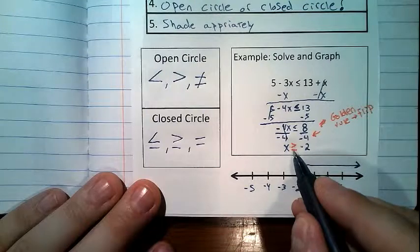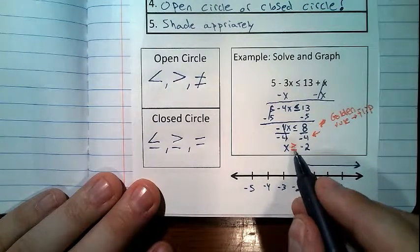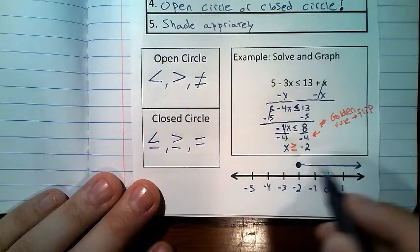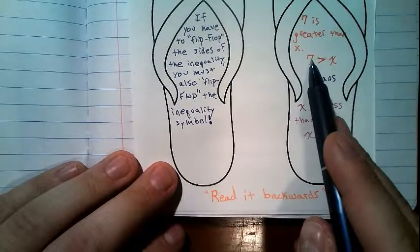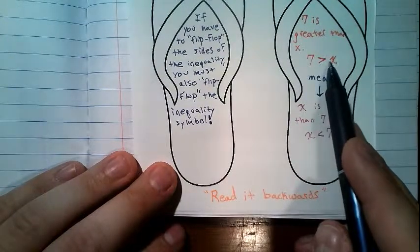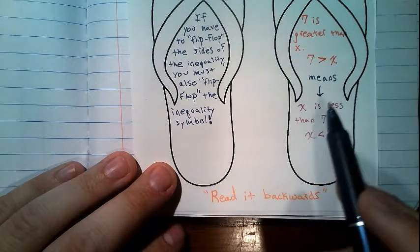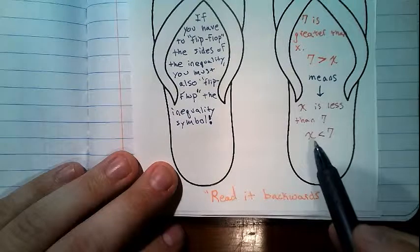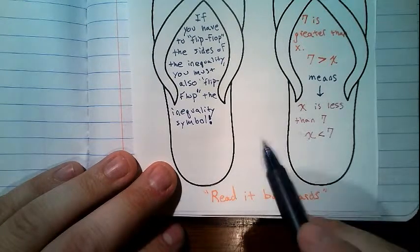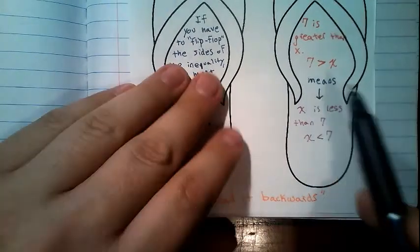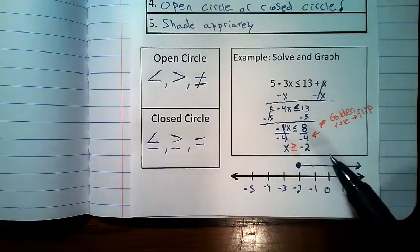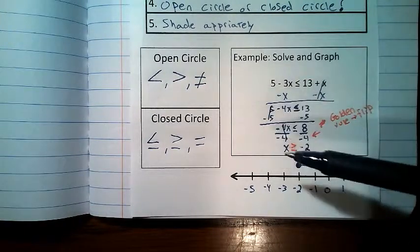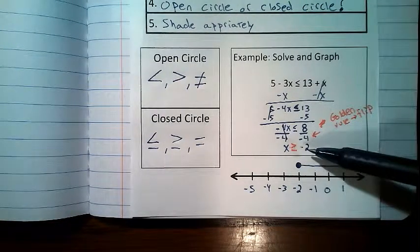That arrow shortcut doesn't work if it's not written correctly. For example, if 7 is greater than x and you shade right based on the arrow, that's wrong — x is actually less than 7 and should shade left. So for best practice, always write it as variable, inequality symbol, then constant.